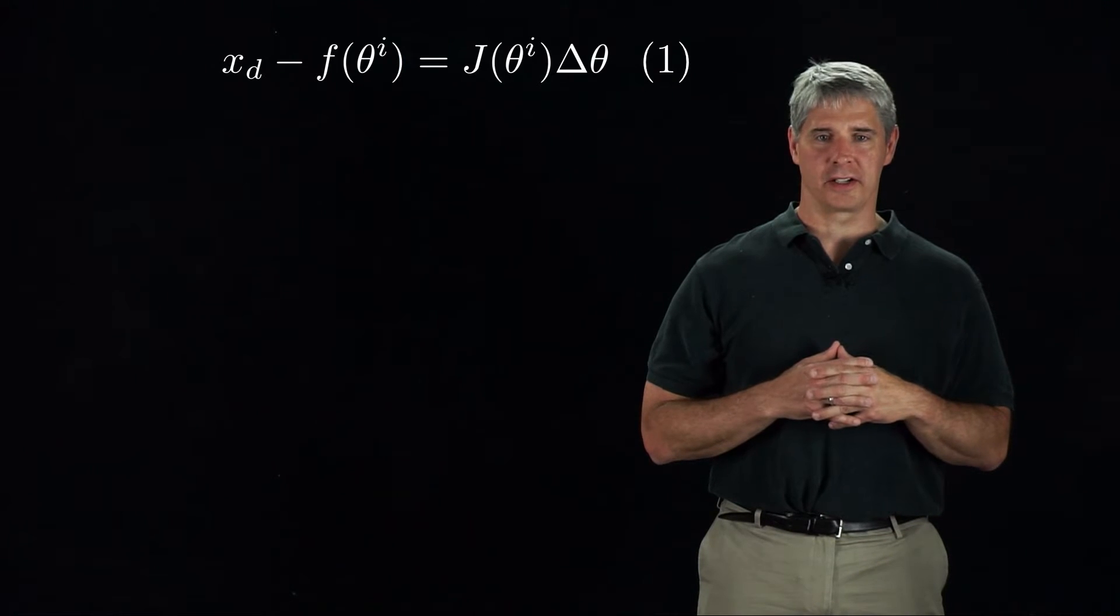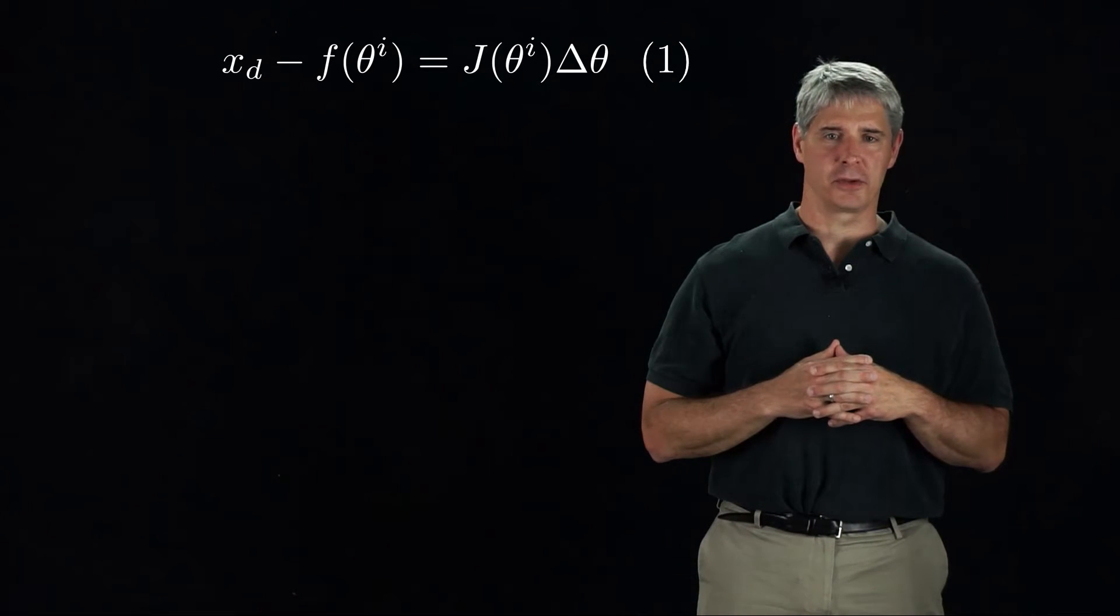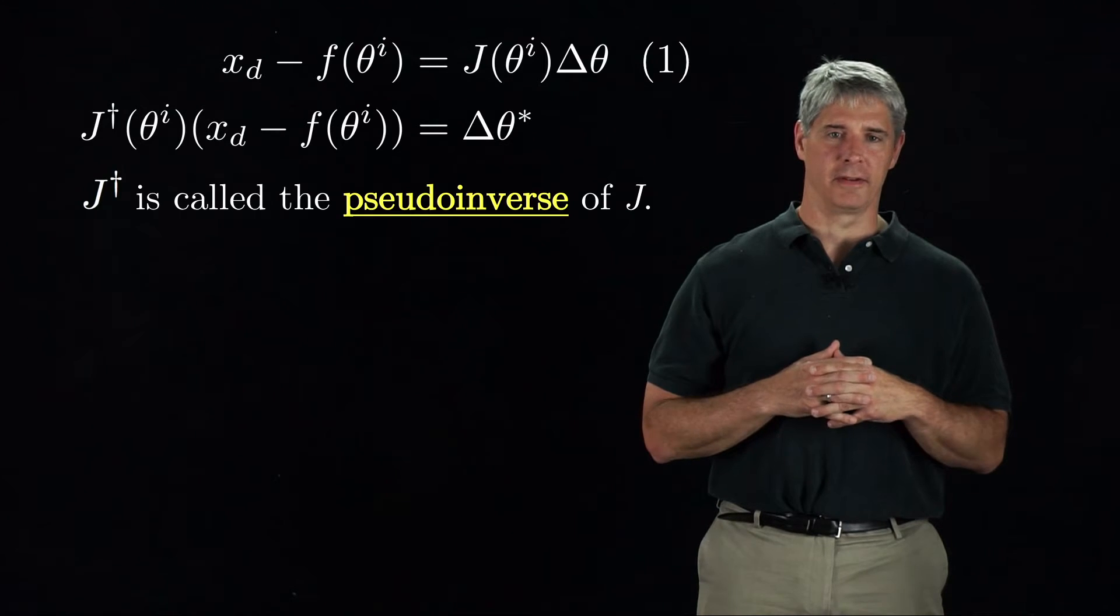Let's rewrite the equation we are trying to solve and number it 1. Instead of pre-multiplying both sides by J inverse, we could pre-multiply by the pseudo-inverse of J.